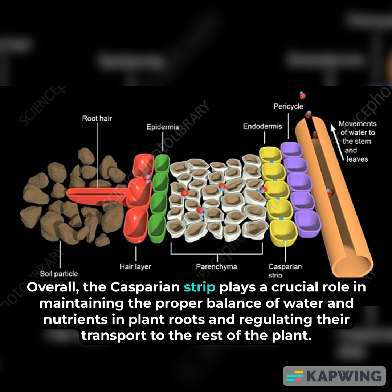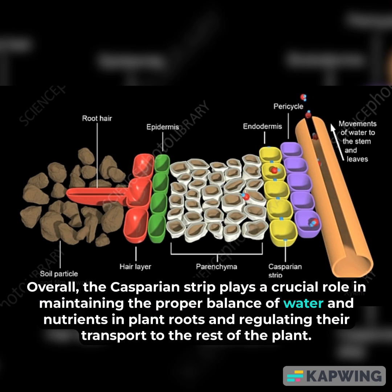Overall, the Casparian strip plays a crucial role in maintaining the proper balance of water and nutrients in plant roots and regulating their transport to the rest of the plant.